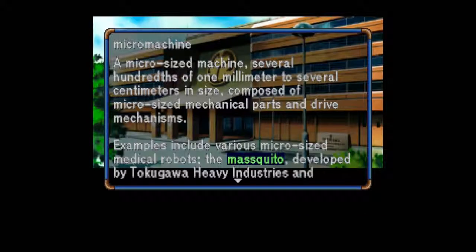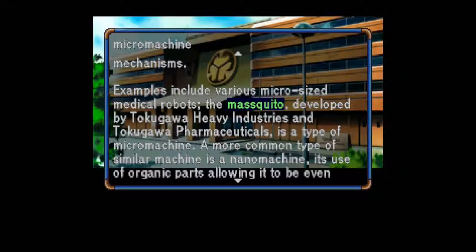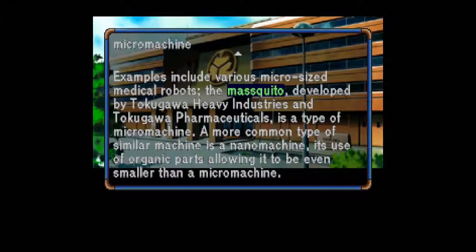Micro-machine: A micro-sized machine, several hundredths of one millimeter to several centimeters in size, composed of micro-sized mechanical parts and drive mechanisms — like a nano-machine. Examples include various micro-sized medical robots. The mosquito, developed by Tokugawa, is a type of micro-machine. A more common type of similar machine is a nano-machine, its use of organic parts allowing it to be even smaller than a micro-machine.